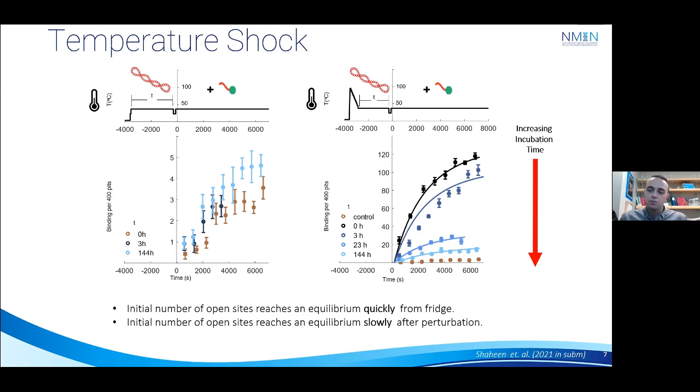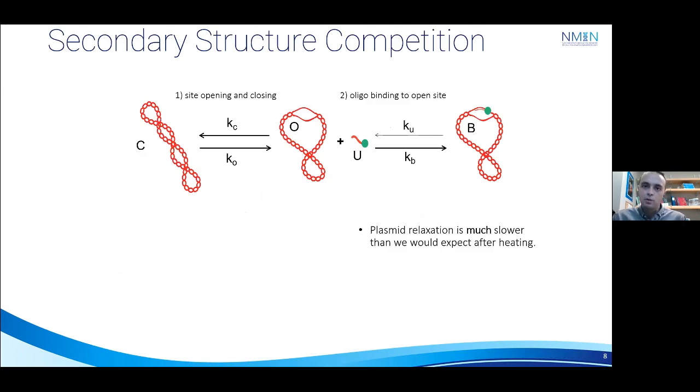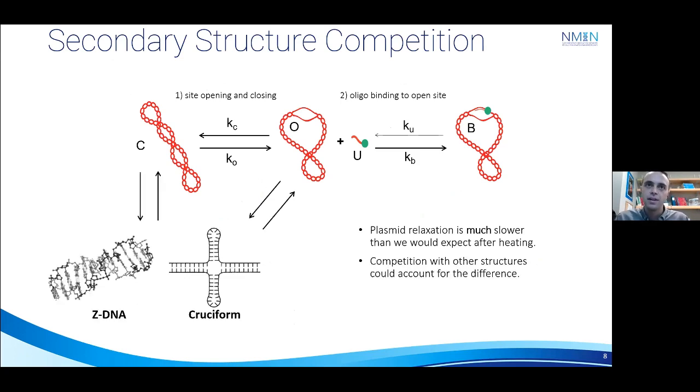So what gives? The strands are right next to one another the whole time, and you might expect this process to be fast. Remember, however, that the kinetic model that we've used to describe this process is vastly oversimplified. Namely, there's all these other secondary structures which we're completely ignoring. And so this result suggests that competition between the unwinding site and these other structures for that limited torsional energy might be driving these long timescales.